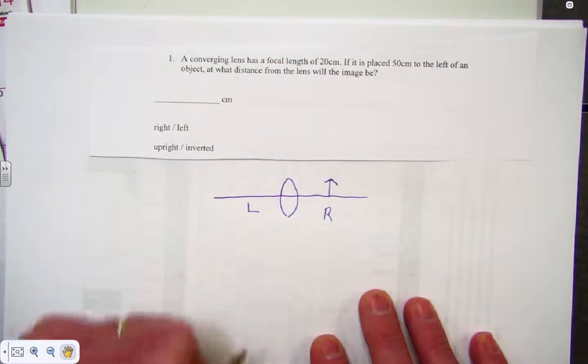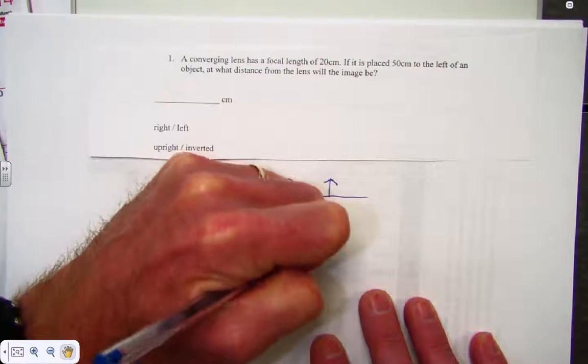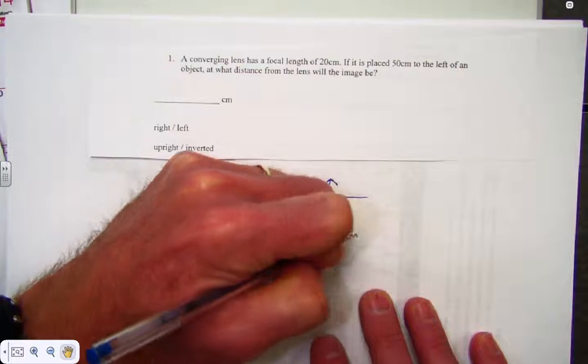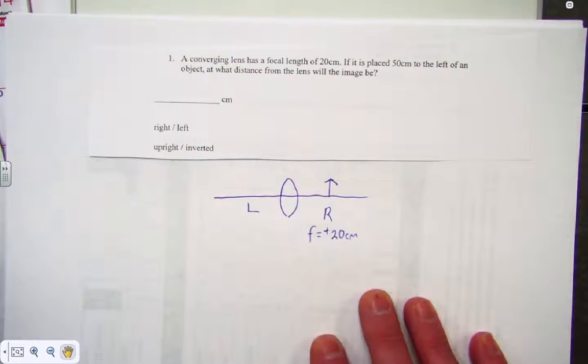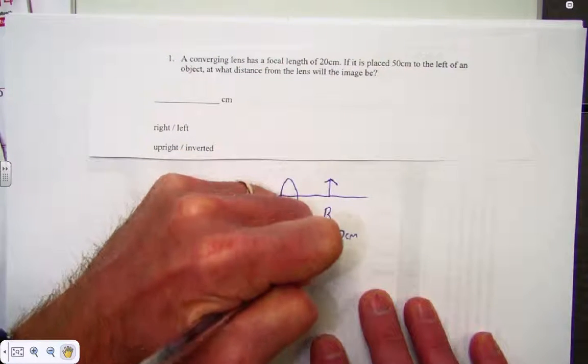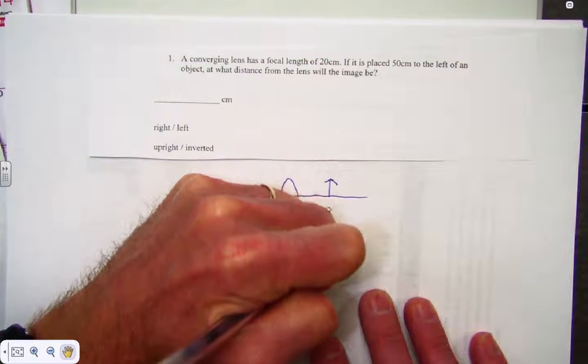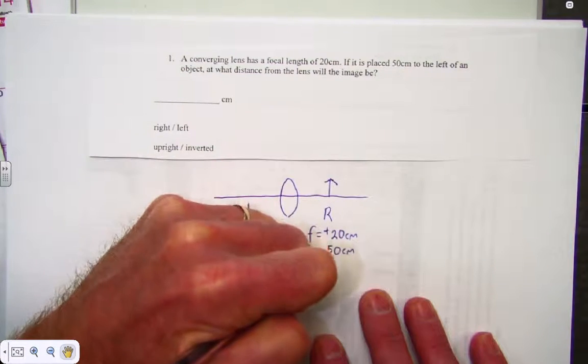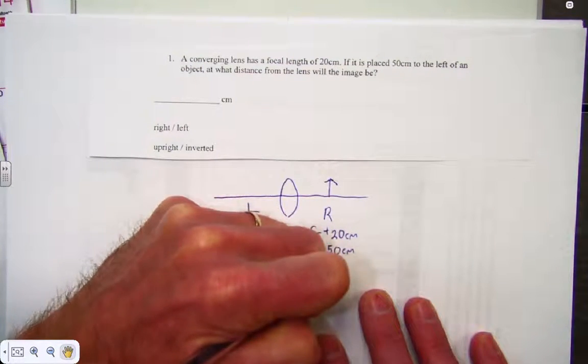And now identify the variables. The focal length is 20. Since it is a convex lens, it's always positive. The object distance is 50. And we're asked to find where is the image located, so that is what we want to find.